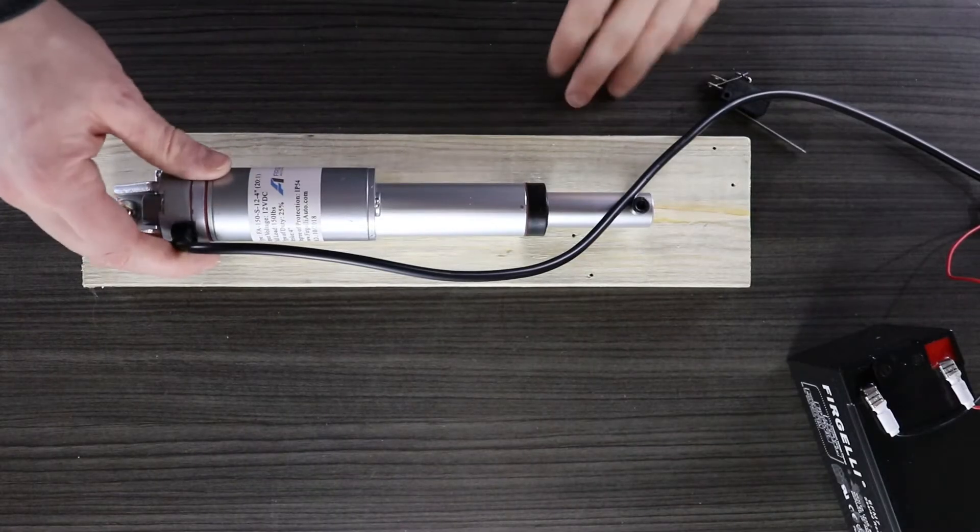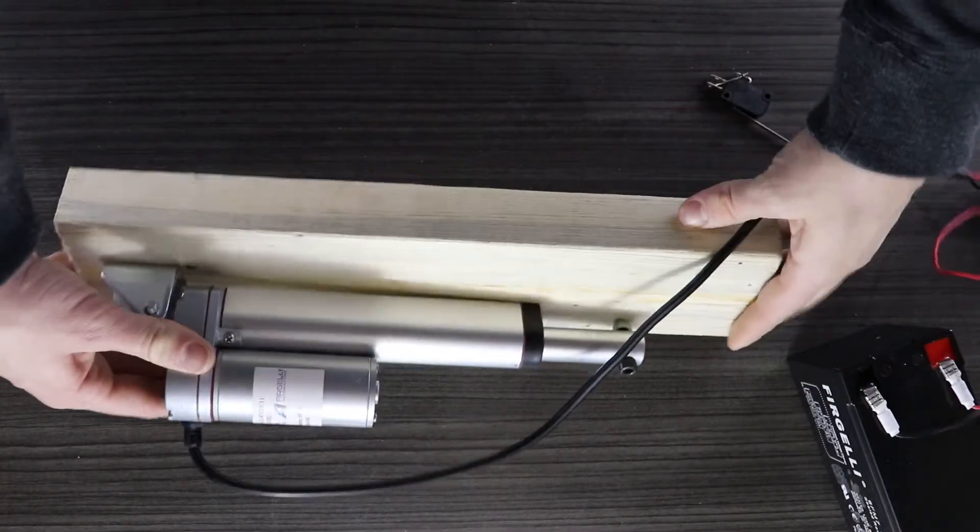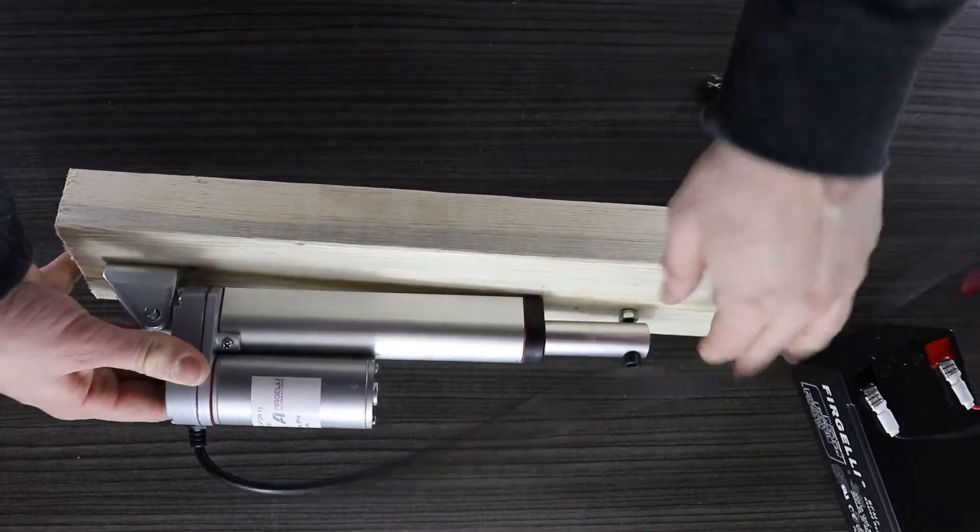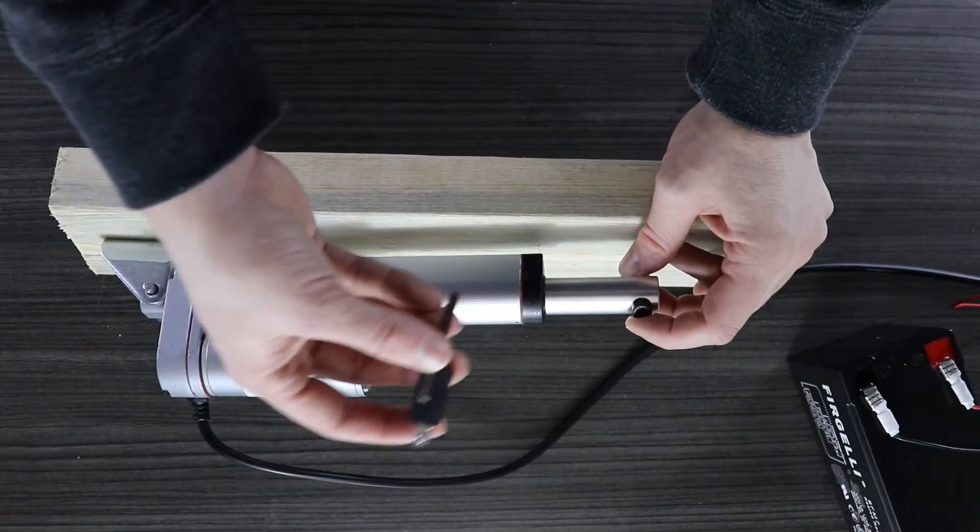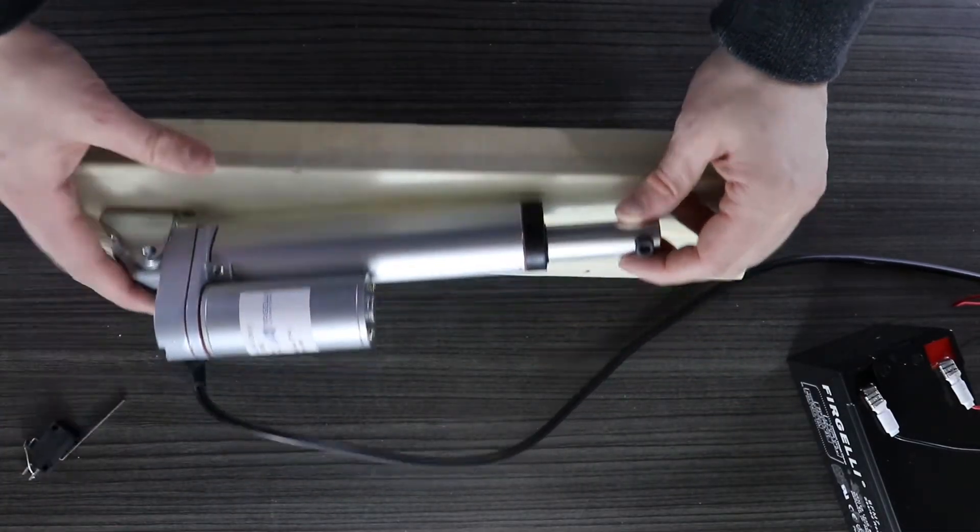So I've gone ahead and mounted the actuator on this wooden test rig. Basically we've just got a mounting bracket at this end and then I've just put a bolt through this end so that the limit switch can be triggered when the actuator is moving up and down.